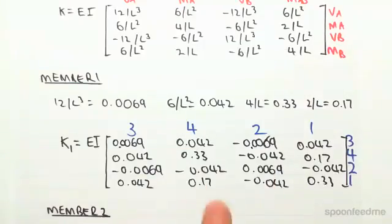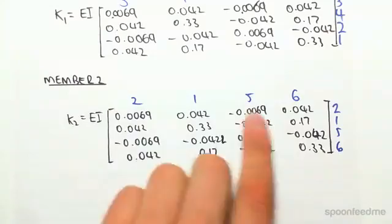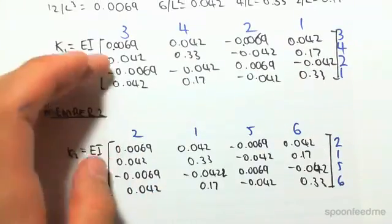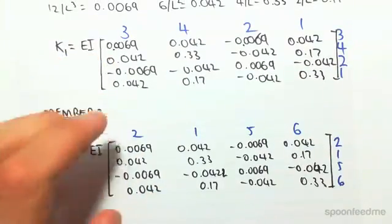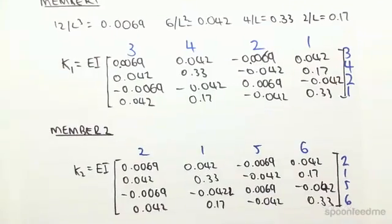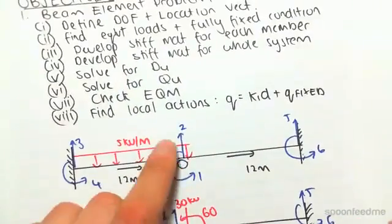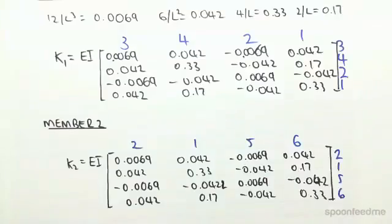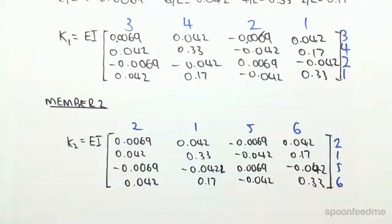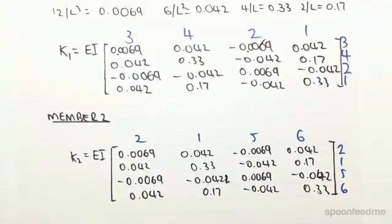The actual stiffness matrix will be the exact same, so I've already done it for you - I've just copied that matrix there. For member one and member two the only difference, which is critical, is going to be the labeling of points. I've already done that as well. For this one it's 2, 1, 5, 6.